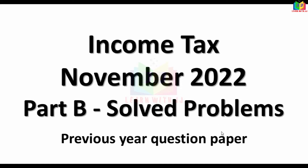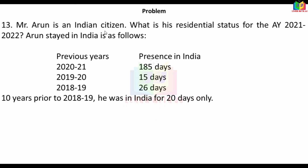Mr. Arun is an Indian citizen. What is his residential status for the assessment year 2021-22? Arun stayed in India as follows: in the previous year 2020-21, 185 days; in 2019-20, 15 days; in 2018-19, 26 days; and in the 10 years prior to 2018-19, he was in India for 20 days only.